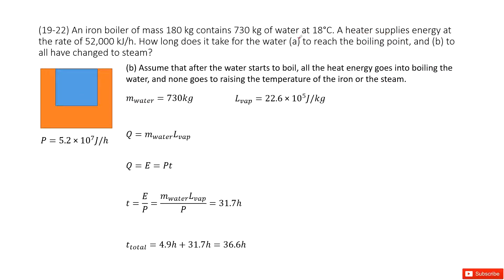Part B asks how much time it takes to change all water to steam. What is steam? It's gas. There's a phase shift from liquid to gas. The heat required is the mass of water times the vaporization constant L_vap, which you can find in your textbook.